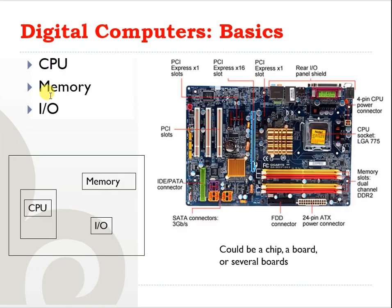Now let's have a quick look at how a simple digital computer is constructed — the basics of a digital computer. The main three components of a digital computer are the CPU (Central Processing Unit), memory which is used for storing information and programs, and I/O which stands for input and output. Here you can see it in block diagram form.